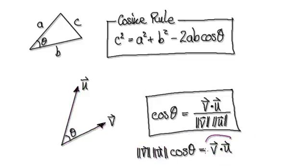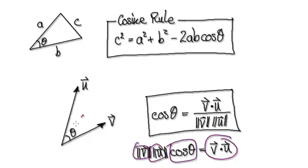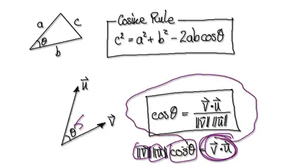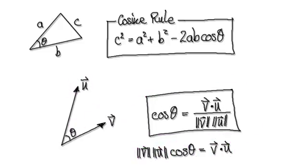There's a connection between the dot product and these three components. So if you want to know the angle, we can use the dot product and work backwards to find the angle that exists between the two vectors. By looking at the dot product, we can work backwards to find the angle.